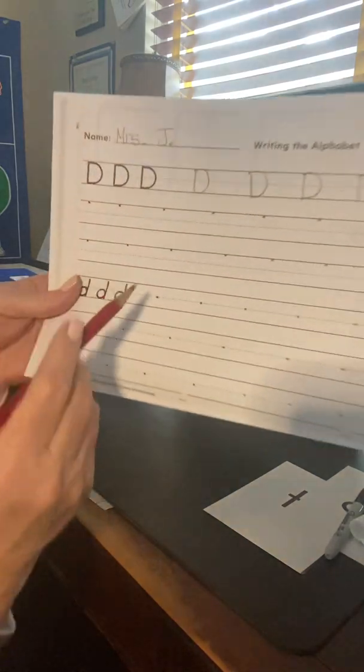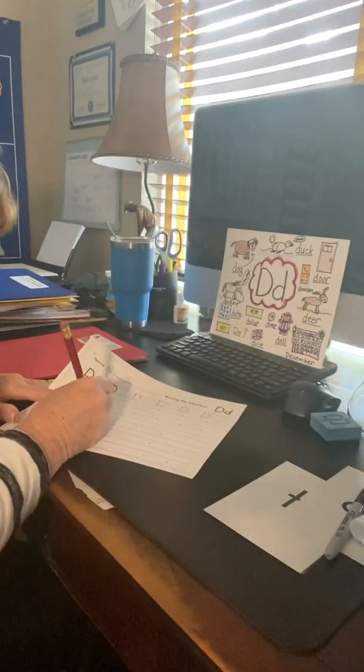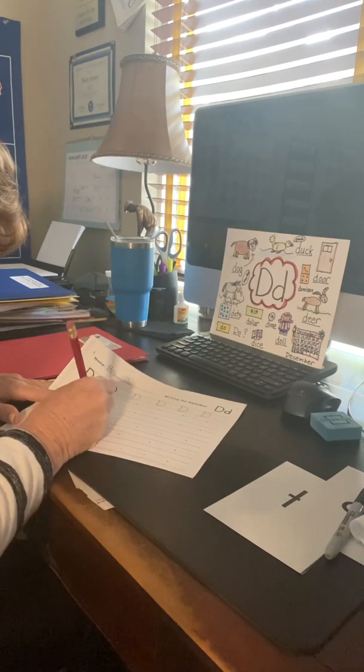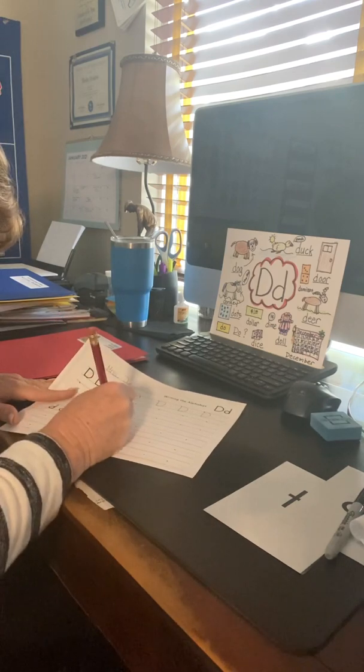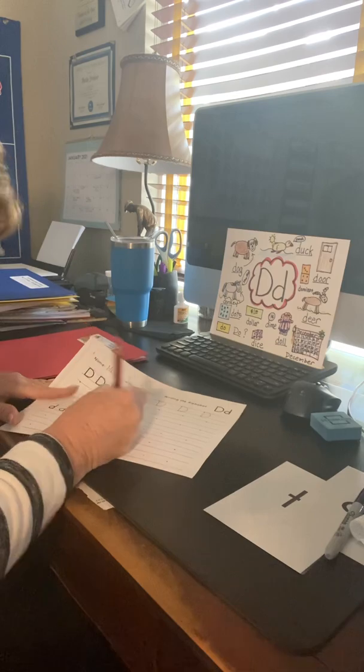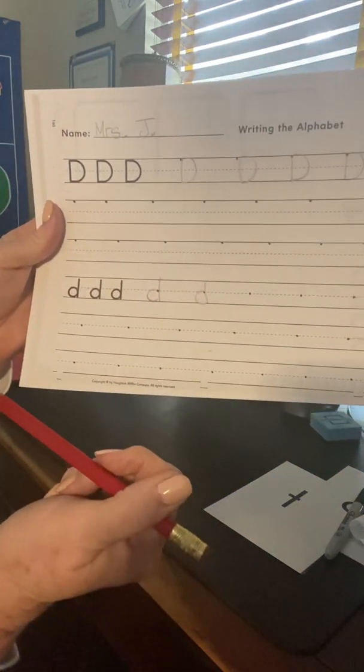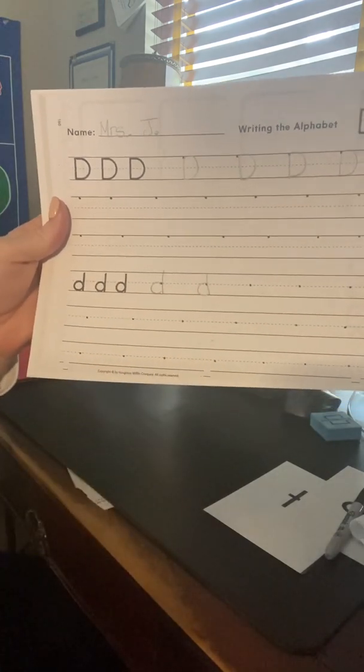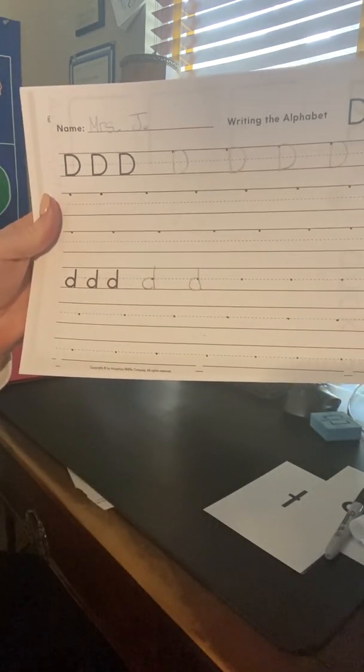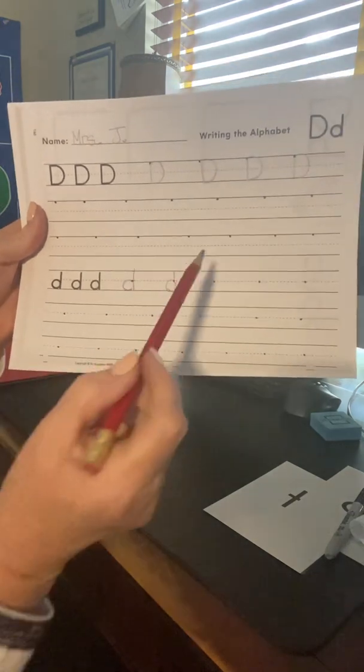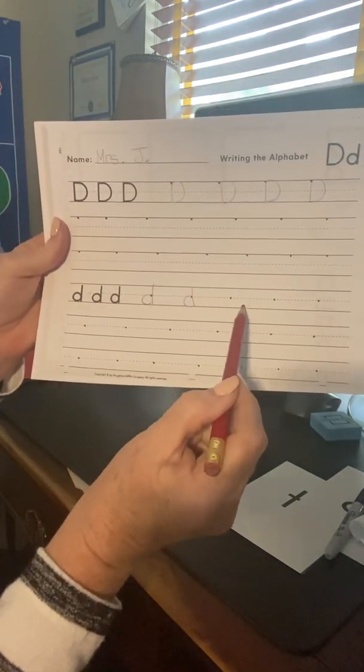And for lowercase d, we put dots in the middle. So that should help to remind you that you're going to start with a magic C, straight line down, start with a magic C. It really does help so that you don't accidentally go the other way and make a B. Bs and Ds are hard for kindergarten. A lot of kids get Bs and Ds mixed up. So if it was a B, we would start at the top and then go the other way, right? All right, I'm just going to make two.